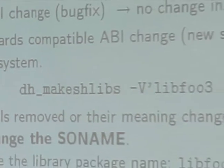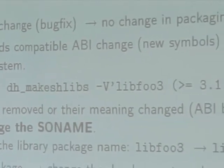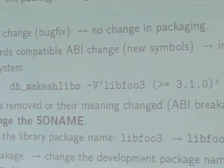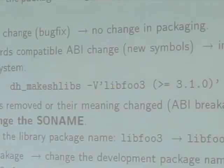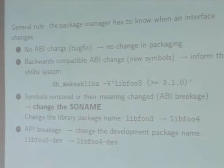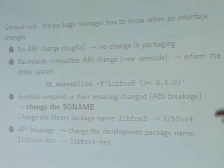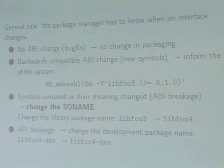The third case is that symbols have been removed or the meaning is changed. This is what we call ABI breakage. In this case, the soname has to be changed. In turn, the library package, which is built upon the soname, has to be changed as well.